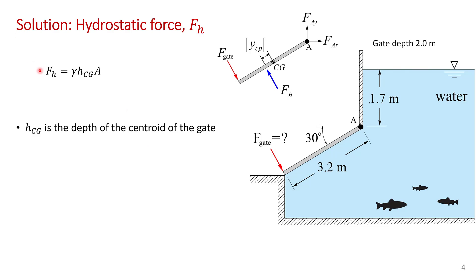So the hydrostatic force is the specific weight of the water, the depth of the centroid, and the area of the gate. So here hcg is the depth of the centroid and we can get that from simple geometry.